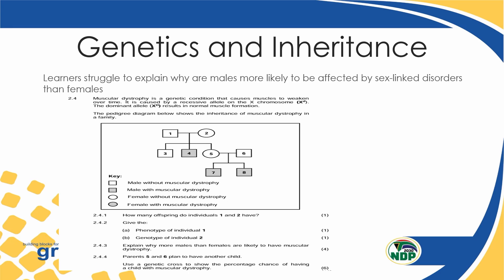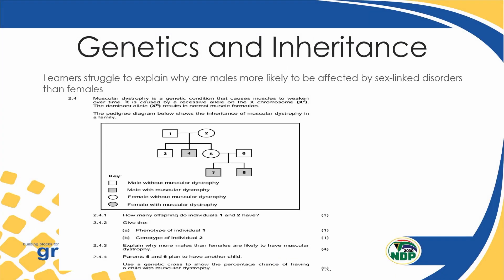If we take a few questions from here — it says, how many offsprings do individual one and two have? You look at individual one and two. They have offspring number three, number four, number five. Number six does not belong there; number six is married to number five. So you must be very careful — the offsprings are the ones that are directly linked to their parents above them.